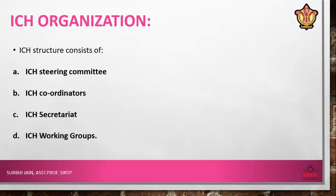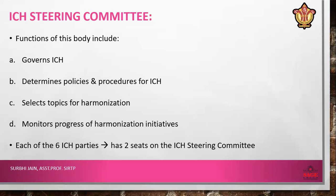ICH organization: the ICH structure consists of the ICH Steering Committee, ICH Coordinator, ICH Secretary, and ICH Working Group — these are the four basic classifications of the organizational structure of ICH. The functions of the ICH Steering Committee include governing the whole ICH, determining policies and procedures, selecting topics for harmonization — harmonization meaning the fixation of guidelines to be followed universally — and monitoring the progress of harmonization initiatives.